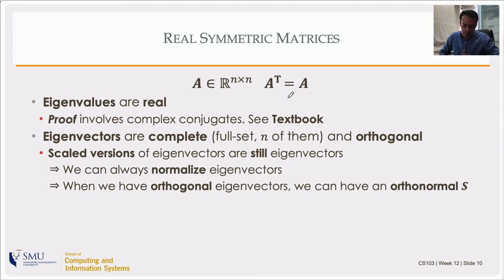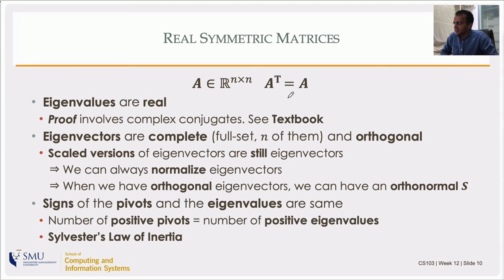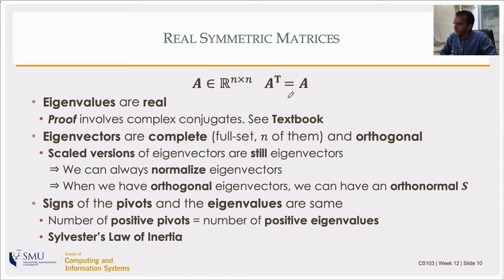The matrix S, where eigenvectors are placed as columns, becomes an orthonormal matrix. The signs of the pivots and the signs of the eigenvalues are connected: the number of positive pivots is the same as the number of positive eigenvalues, and the number of negative pivots is the same as the number of negative eigenvalues. This is Sylvester's law of inertia.